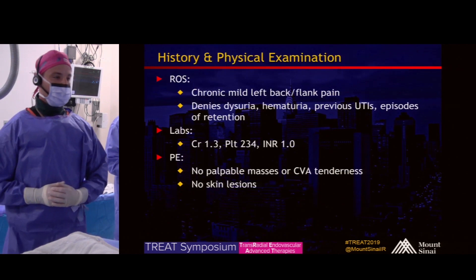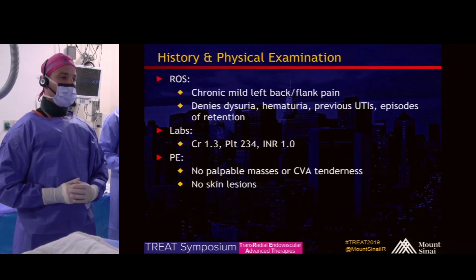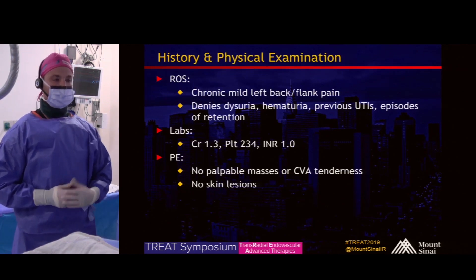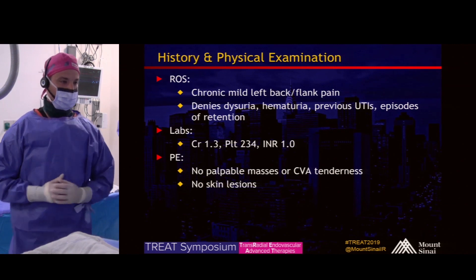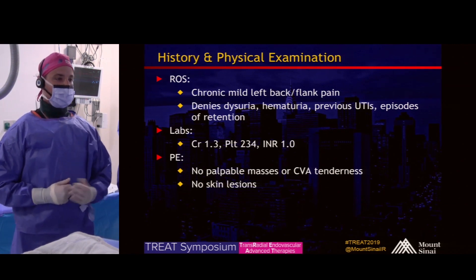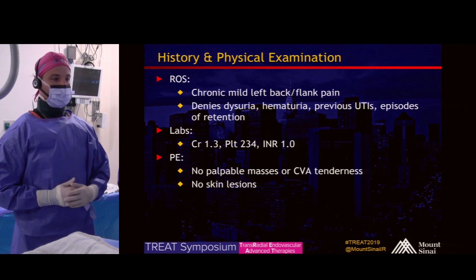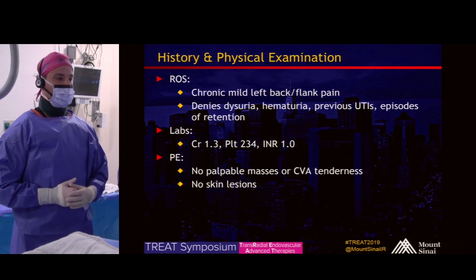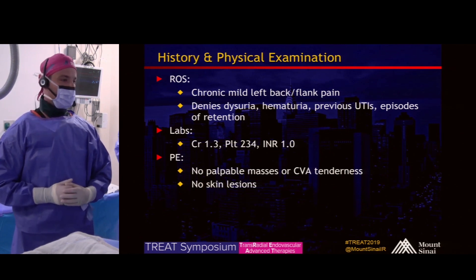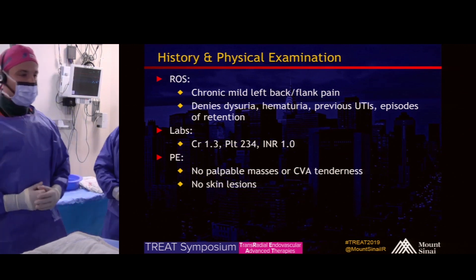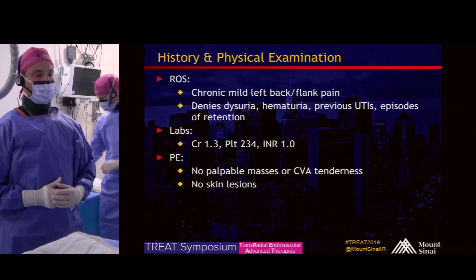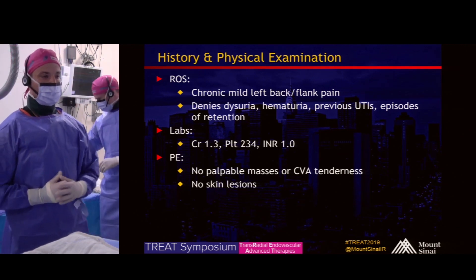On review of symptoms, she has a history of mild chronic left back and flank pain, which she didn't really know what to attribute to. No history of dysuria, hematuria, urinary tract infections, or urinary retention. Her labs are significant for an elevated creatinine of 1.3. On physical exam, she had no palpable masses.